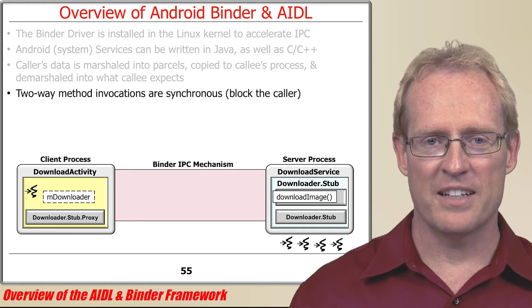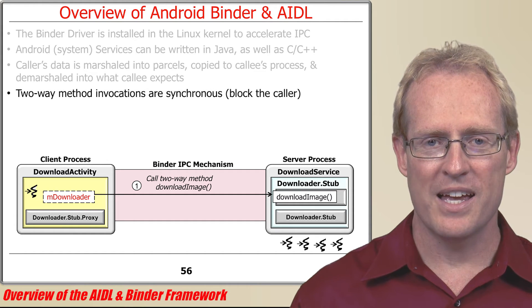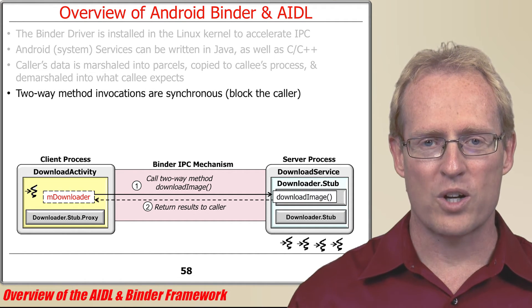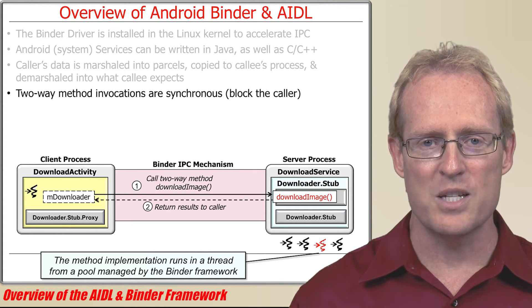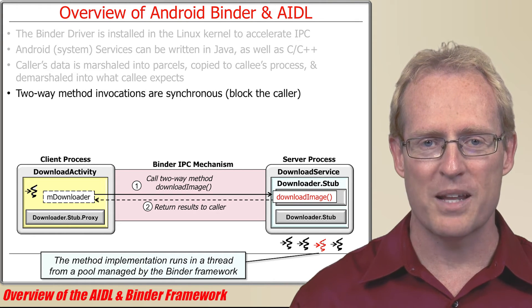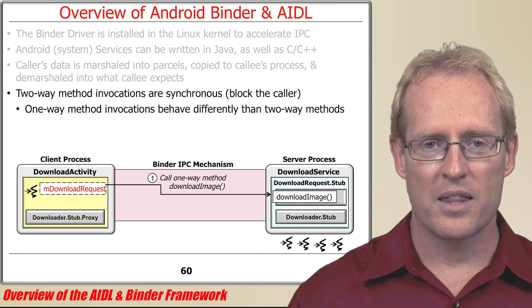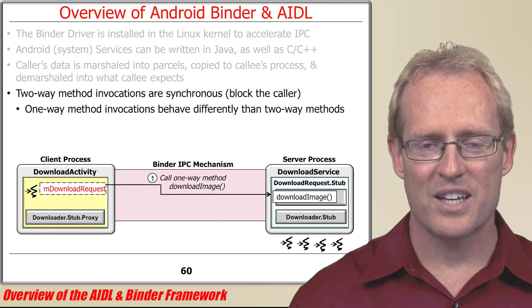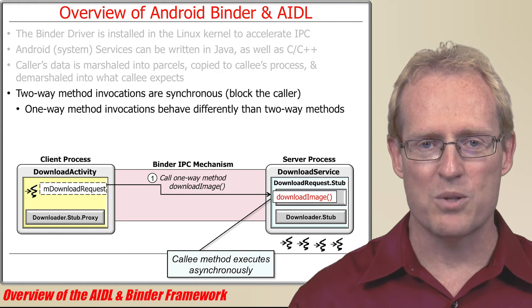By default, methods defined in AIDL interfaces provide two-way synchronous invocation semantics, where the caller sends input parameters to the callee and then blocks synchronously until the callee's method implementation returns results back to the caller. When a caller invokes an AIDL method on an object that spans process boundaries, the method implementation is dispatched in the callee's process by the binder framework, which runs the method implementation in a thread selected from a per-process pool of threads that it manages. In contrast, if an AIDL method is prefixed with the one-way keyword, the caller does not block synchronously waiting for the results, but instead returns immediately while the callee executes the method asynchronously.